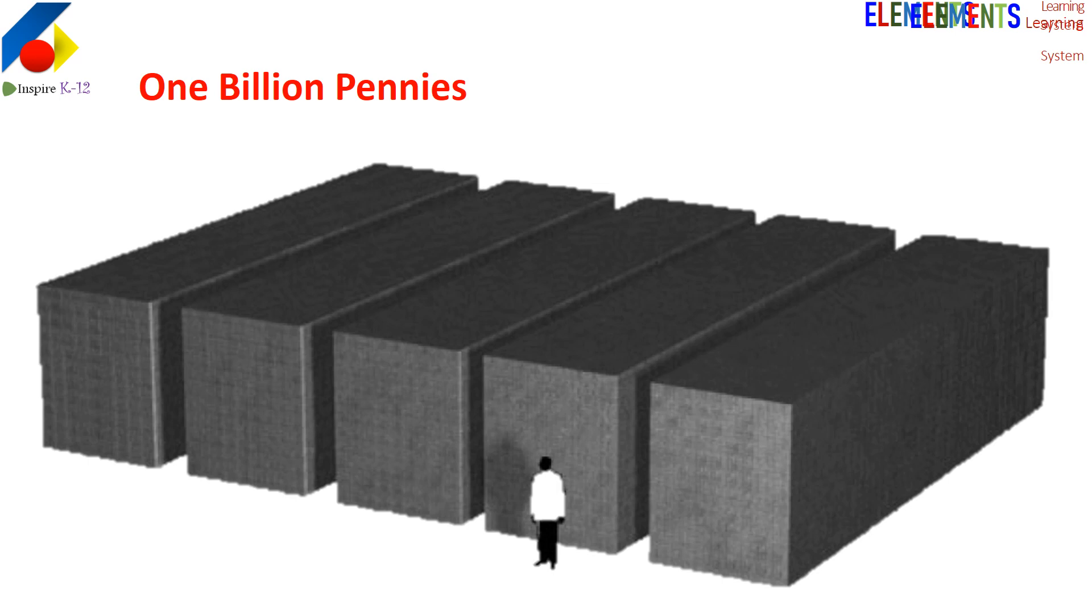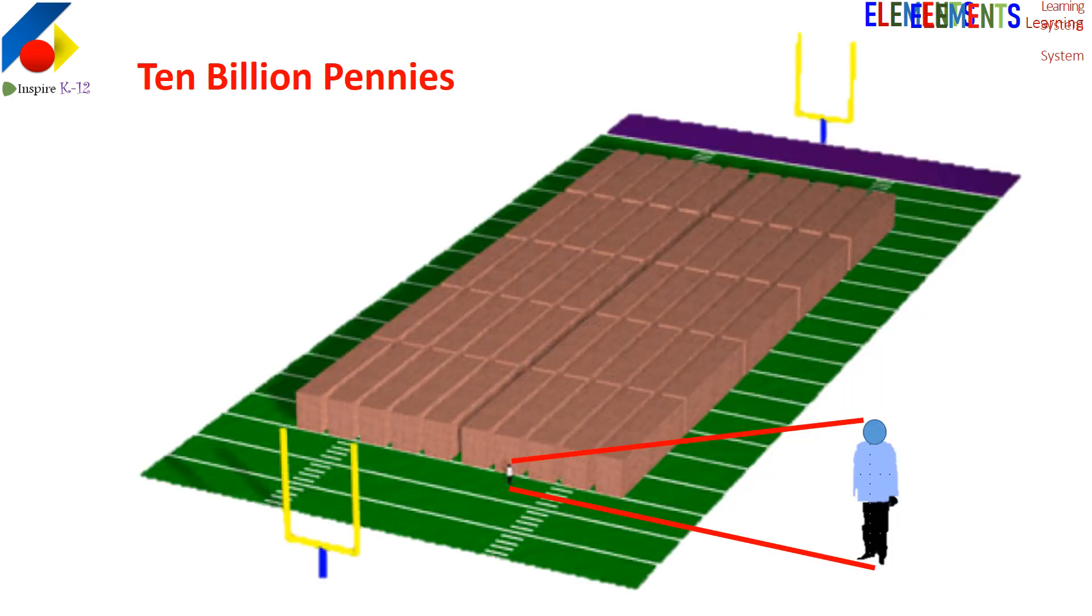Here is how one billion pennies look like. This stack is as big as a normal container that you see on trailers. These are one, two, three, four, five of those containers. And ten billion would cover a stadium.